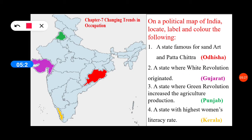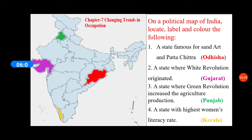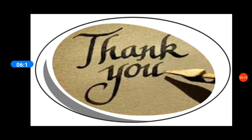Next Chapter Number 7 - Changing Trends in Occupation. A state famous for Sand Art and Pata Chitra — Odisha, Red color से। A state where Wind Revolution originated — Gujarat, Purple से। A state where Green Revolution increased agricultural production — Punjab, light green color से। A state with highest women's literacy rate — Kerala। तो यह थे बच्चों हमारे Map skill chapters 1st से 7th तक। जिन्होंने अभी तक complete नहीं किया, वो अपना complete कर लें। Thank you, have a nice day!